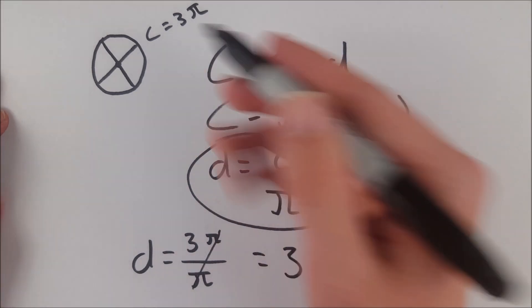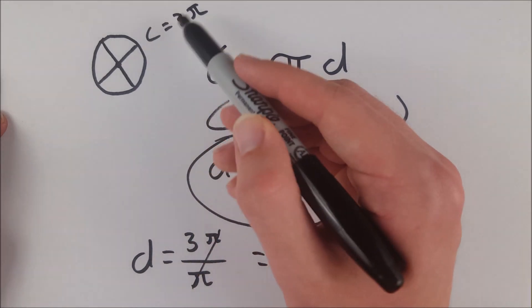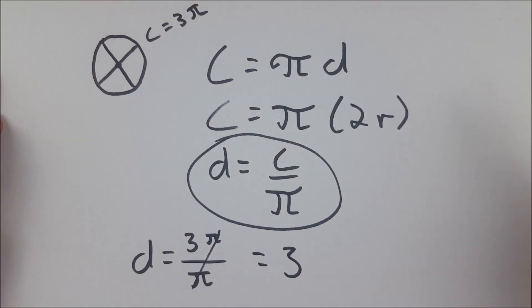So if the circumference equals a multiple of π, then you know that the diameter is basically just the coefficient that π has. Just drop the π because you are dividing by π to find the diameter. So that's the formula.